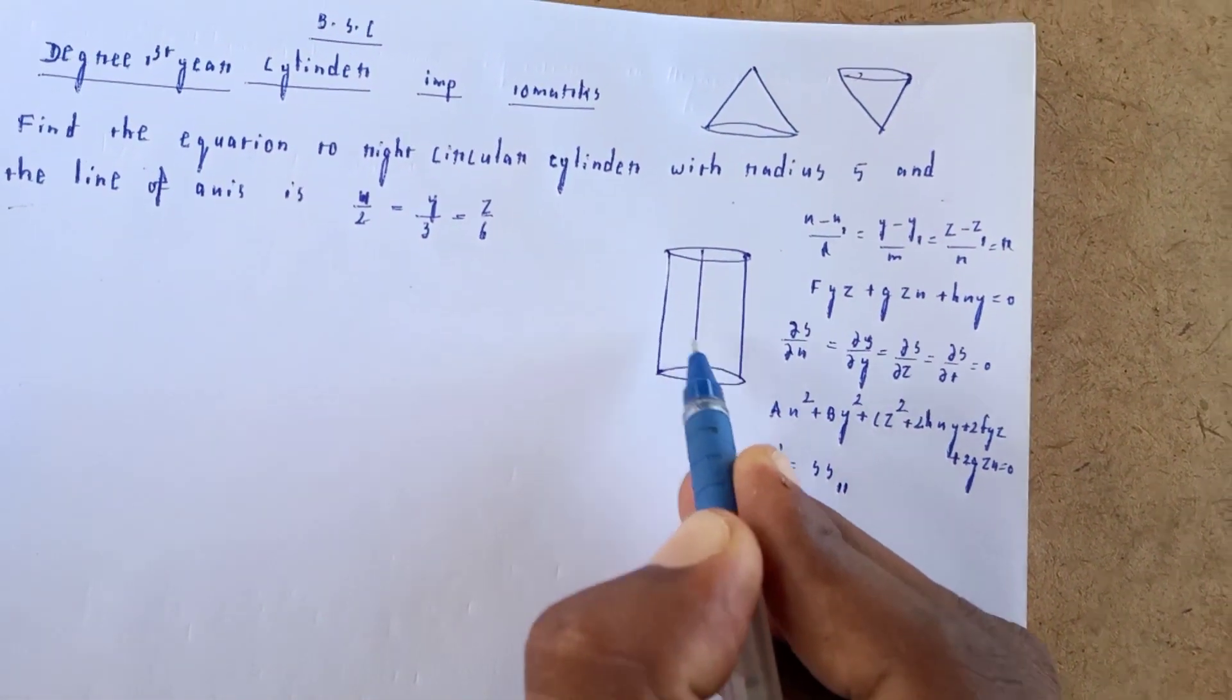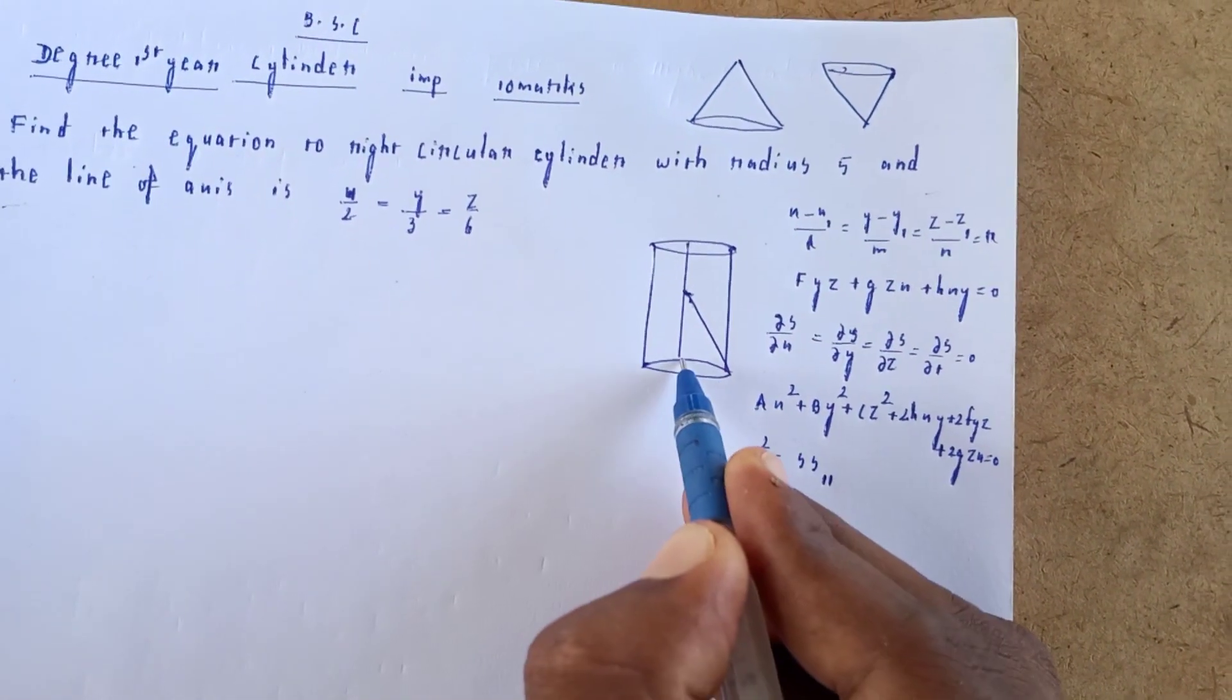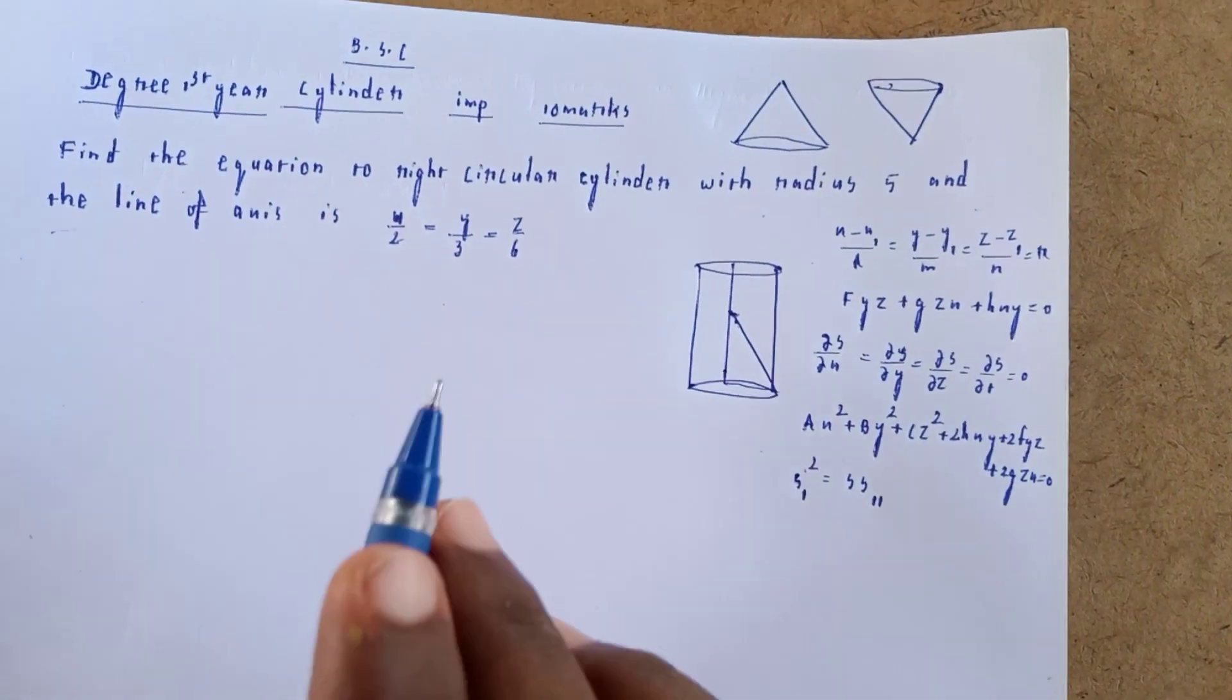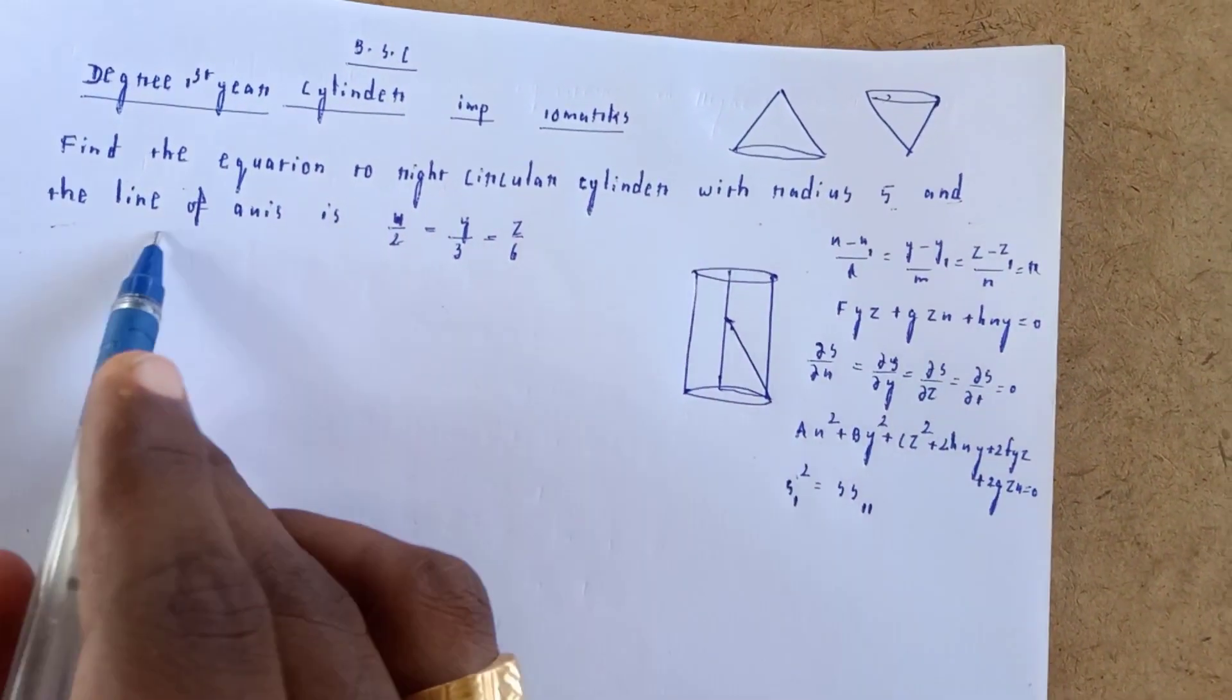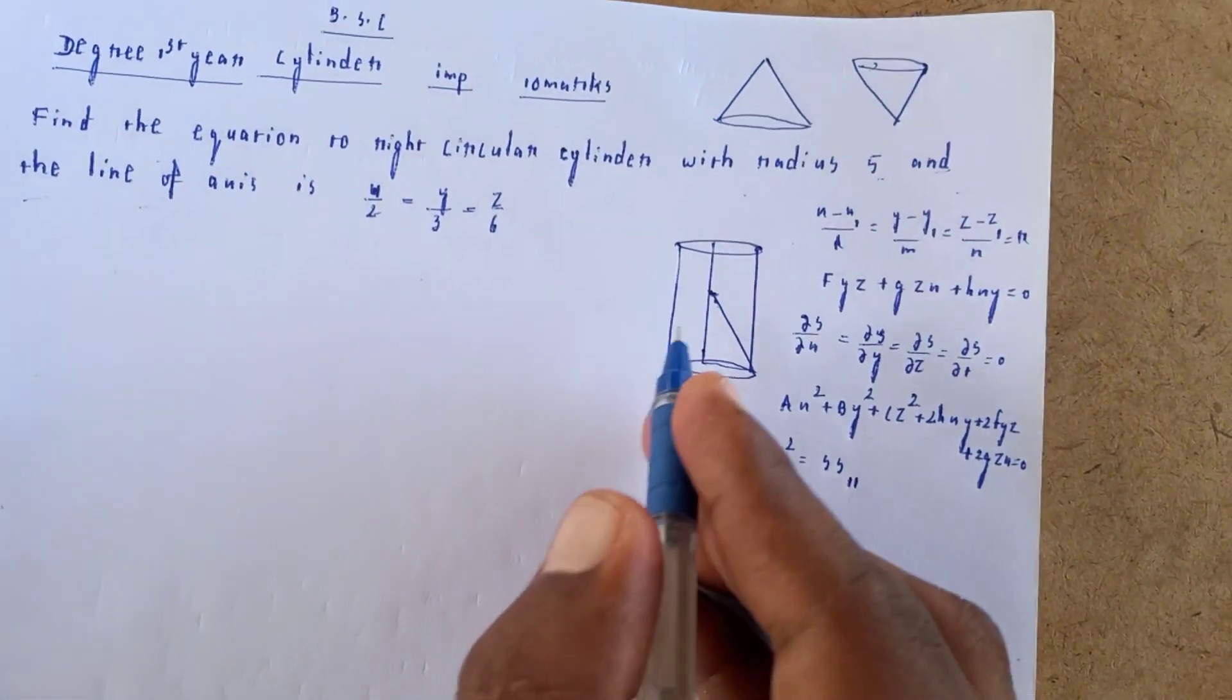Find the equation of a right circular cylinder with radius 5 where the line of axis is x/2 = y/3 = z/6.